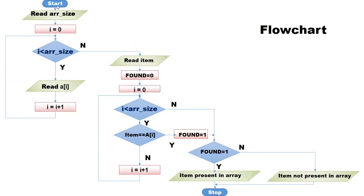Let us see the flowchart. Start. Read array size. The index i is set as 0. If i is less than array size, read a[i], then increment i. This is the loop. Once this loop becomes false, we have read all the elements in the array. Now read the item to be searched. We take a flag variable 'found' and it is set as 0. If an element is found, this flag is set to 1.